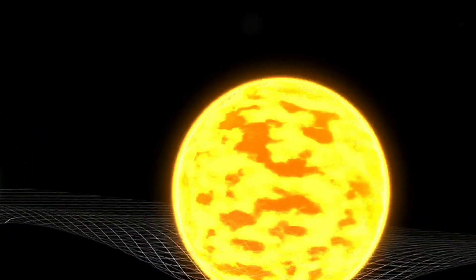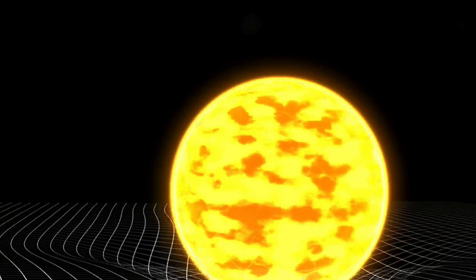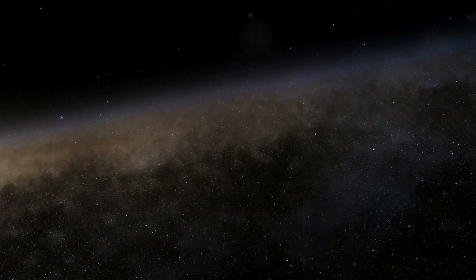First, there's general relativity, which was brought to us by the legendary Albert Einstein. This theory deals with gravity and helps us understand massive objects like planets, stars and galaxies. It's all about the big stuff.